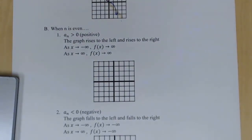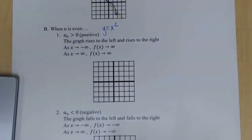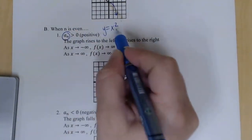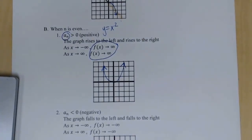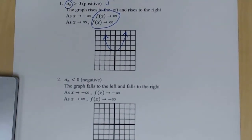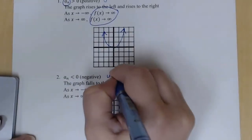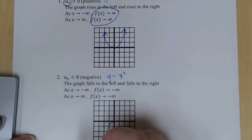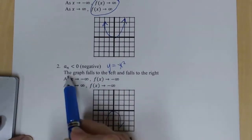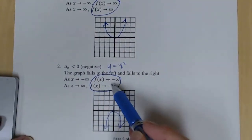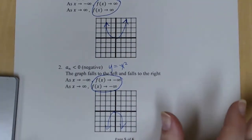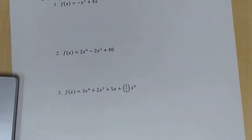For even degree functions, they're similar to y = x². If a sub n is positive, both arms rise — as x → −∞ and x → +∞, f(x) → +∞. If a sub n is negative, it's similar to −x², so it reflects downward — falls to the left and falls to the right — and both limits go to −∞. Your notes on pages four and five will be very helpful for these problems.